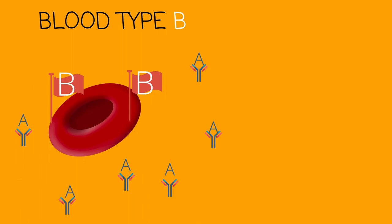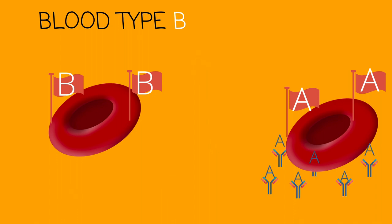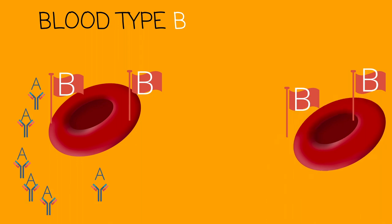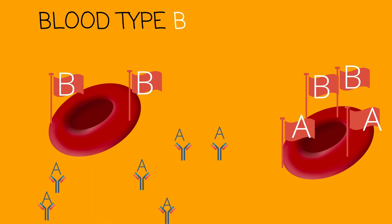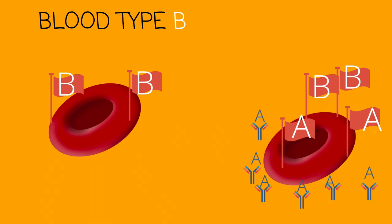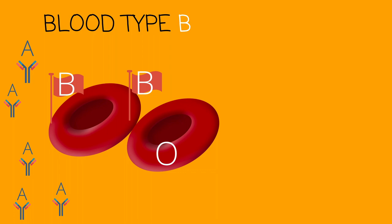Here we have blood type B, with B antigens and A antibodies floating around it to protect it. If blood type A comes around, it will be rejected and attacked by the A antibodies. If blood type B comes around, it will be accepted. If blood type AB comes around, it will be rejected, because the antibodies will see those A flags as a threat. If O comes around, it will be accepted — it is seen as no threat because it has no flags.